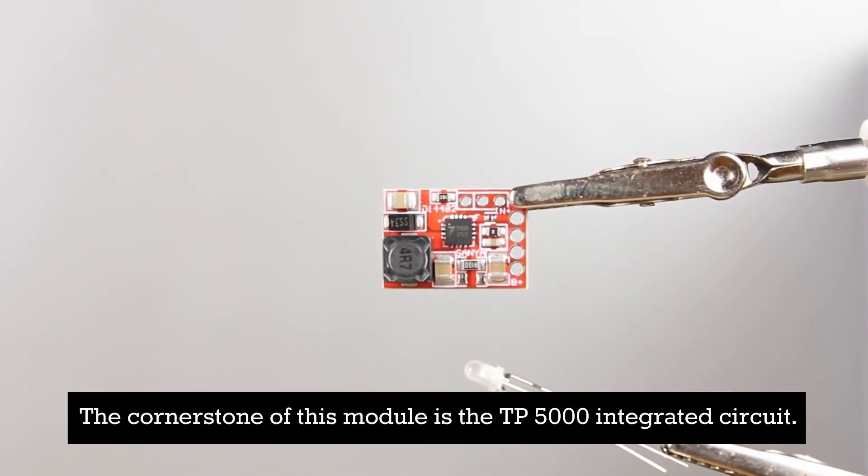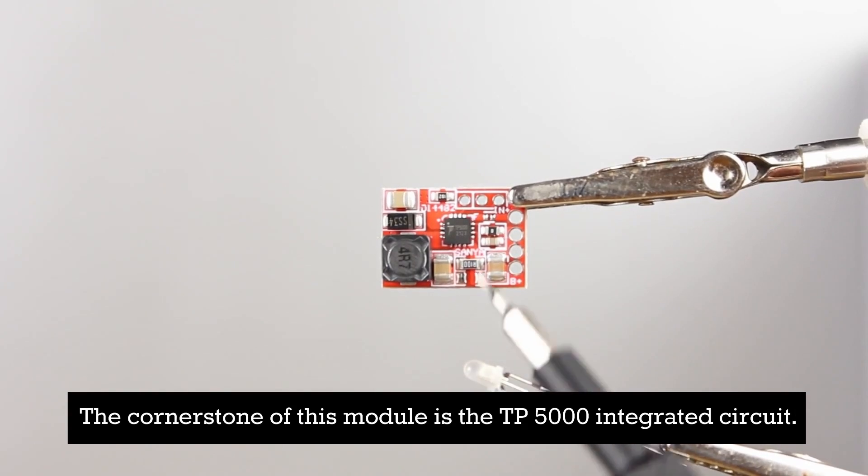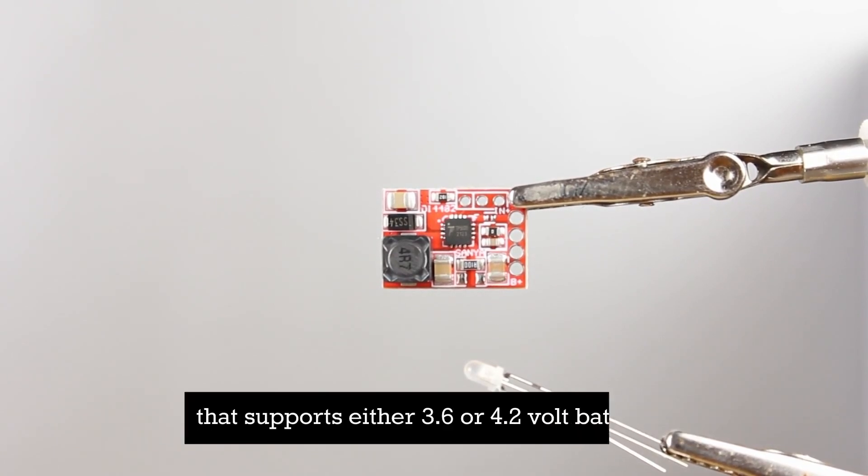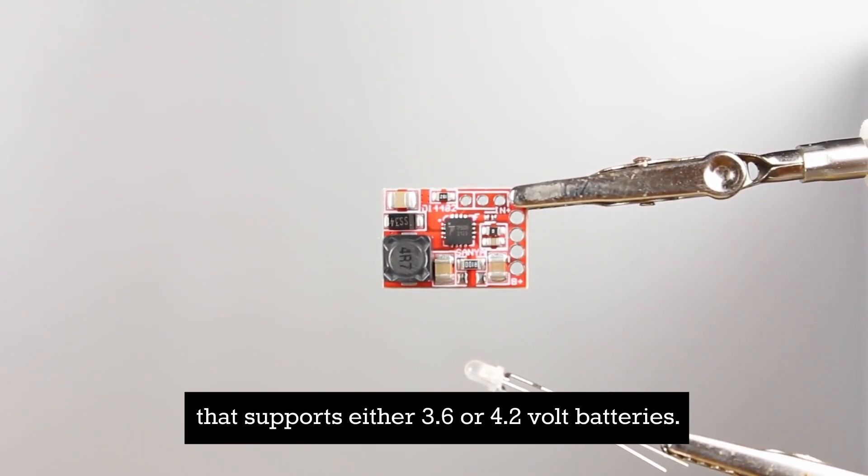The cornerstone of this module is the TP5000 integrated circuit. It's a buck type 1S single lithium battery charge management chip that supports either 3.6 or 4.2 volt batteries.